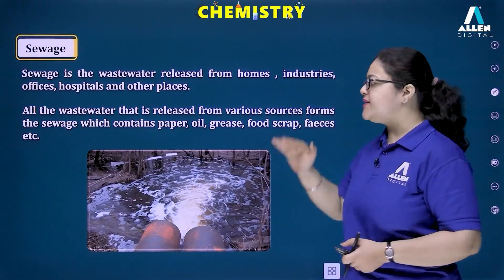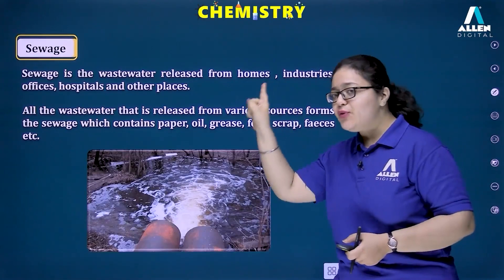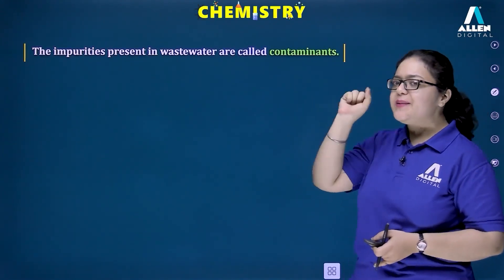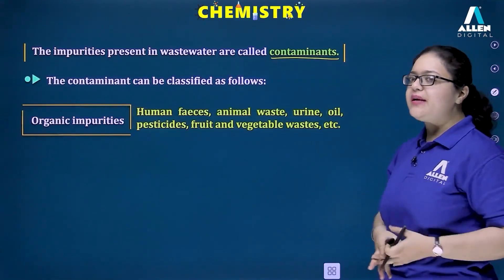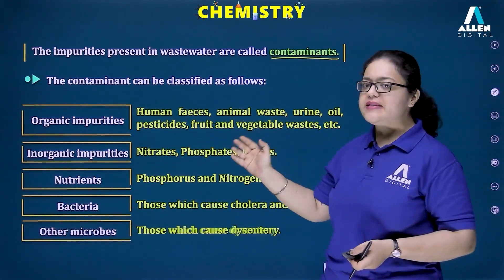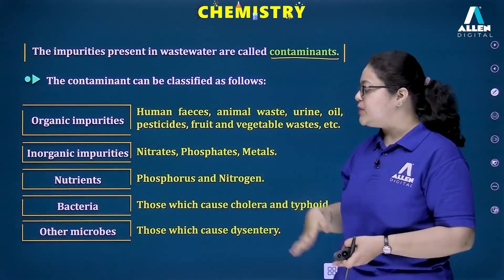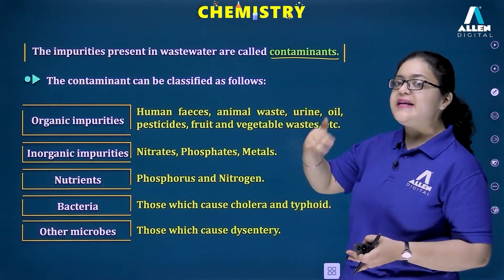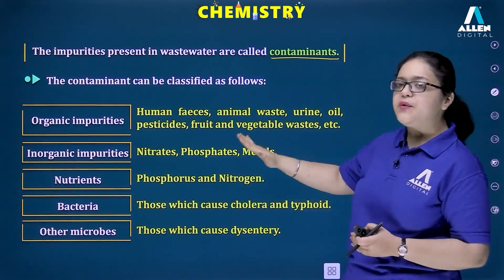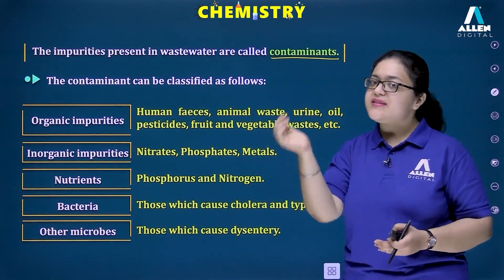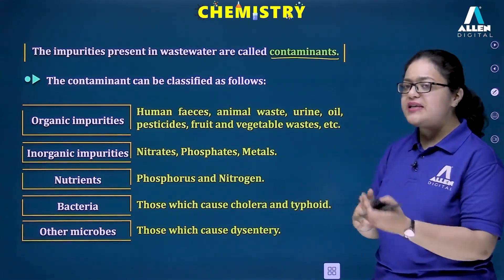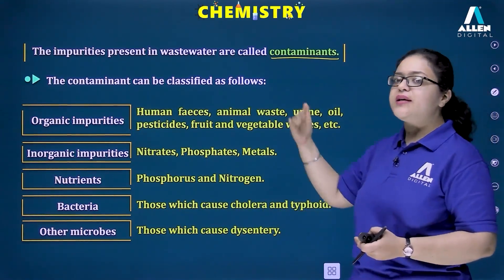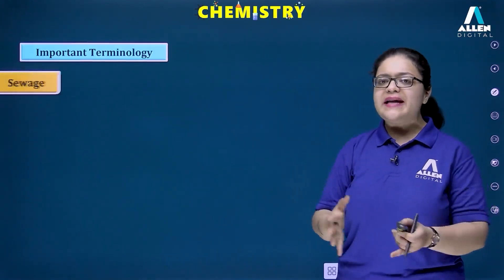The wastewater released contains impurities in the form of paper, oil, grease, food scraps, etc. We need to clean this wastewater. These impurities are known as contaminants, and they are classified as: organic impurities (human feces, animal waste, plant waste, kitchen waste, urine, pesticides), inorganic impurities (nitrates, phosphates, metal impurities), nutrients (phosphorus and nitrogen), bacteria that cause diseases like cholera and typhoid, and other microbes that cause diseases like dysentery.